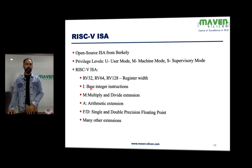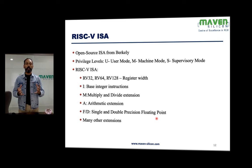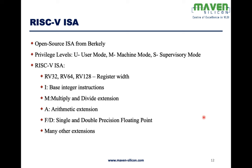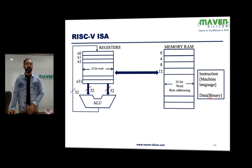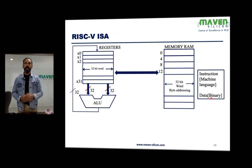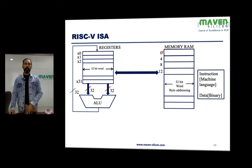RISC-V has different subsets: integer instructions, multiply and divide arithmetic extension, and single and double precision floating point subsets. Based on requirements, you can implement combinations of these subsets along with other extensions. The ISA defines main components: a register file, an arithmetic logic unit (ALU), and memory. Memory holds both instructions and data, with everything represented in 32 bits — machine language stored in memory using byte addressing (0, 4, 8, 12...).